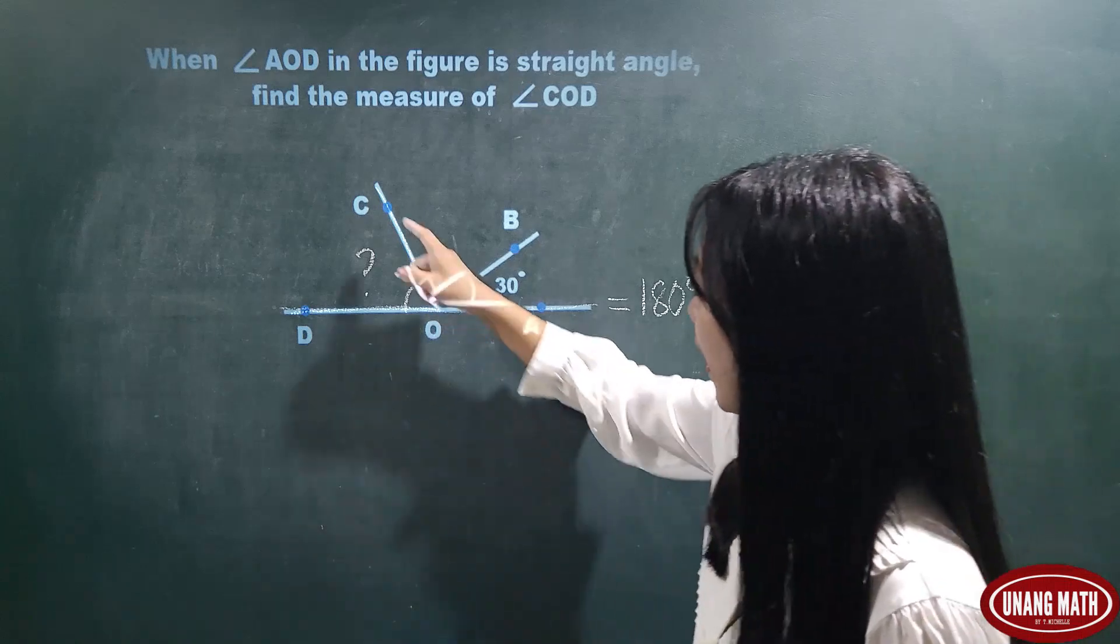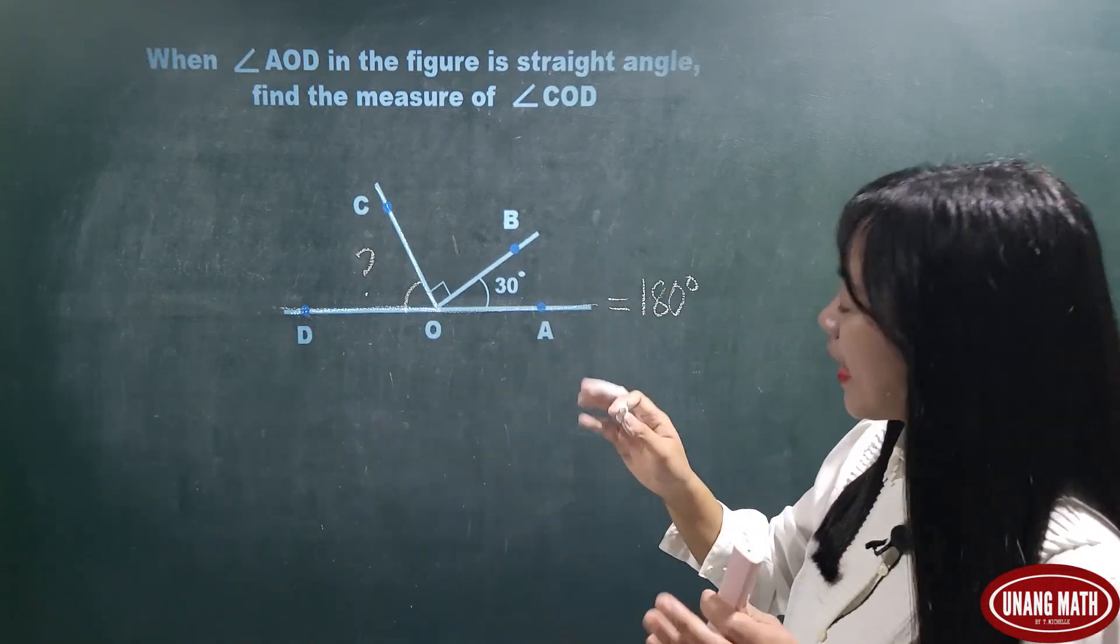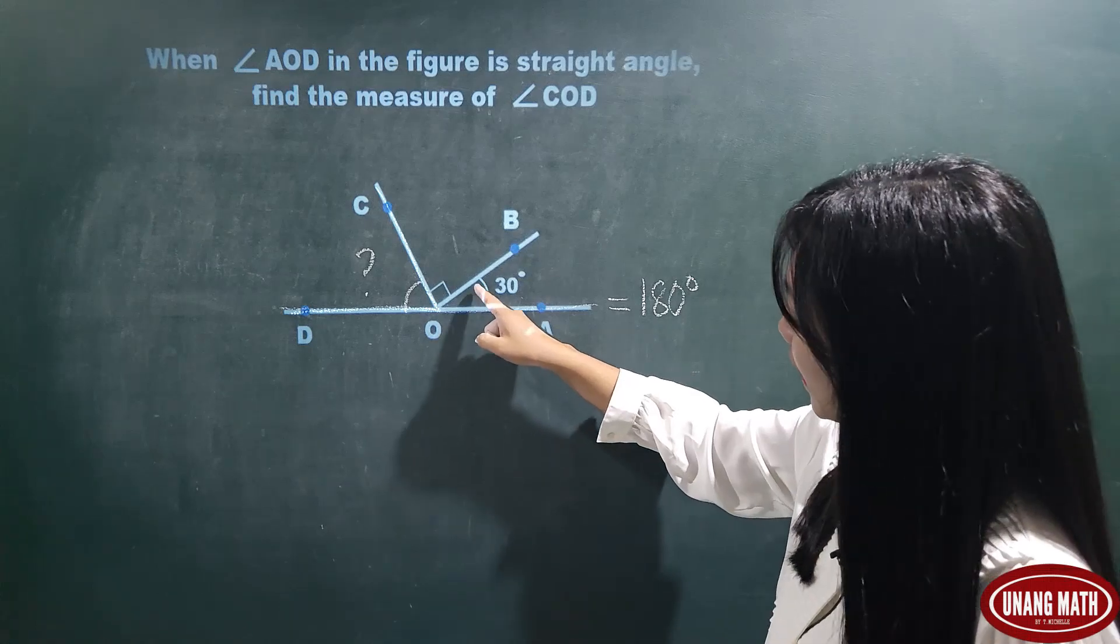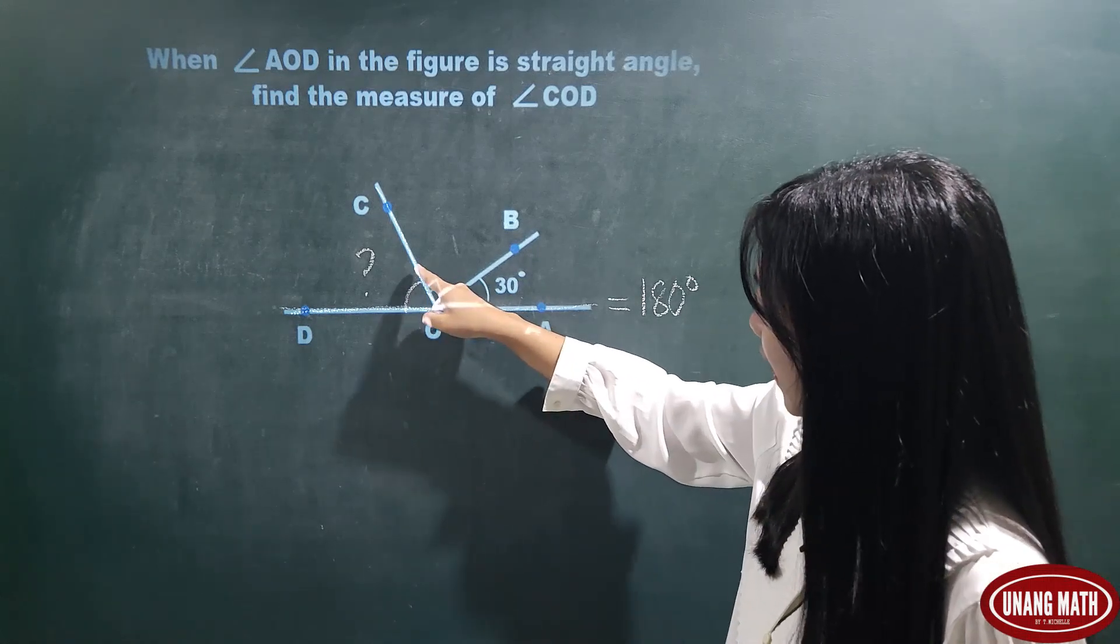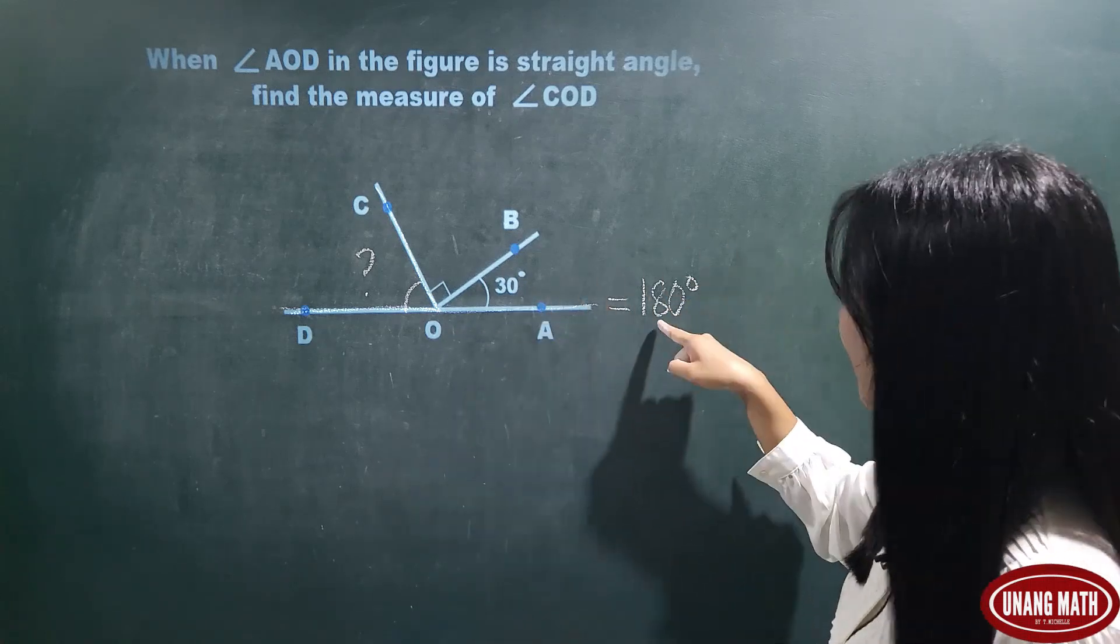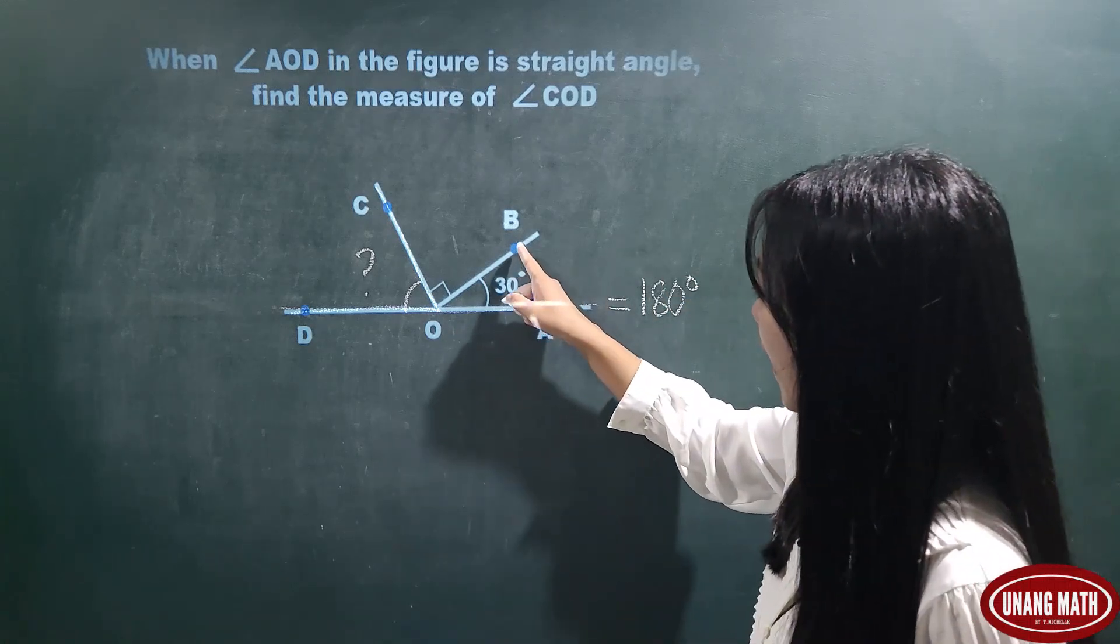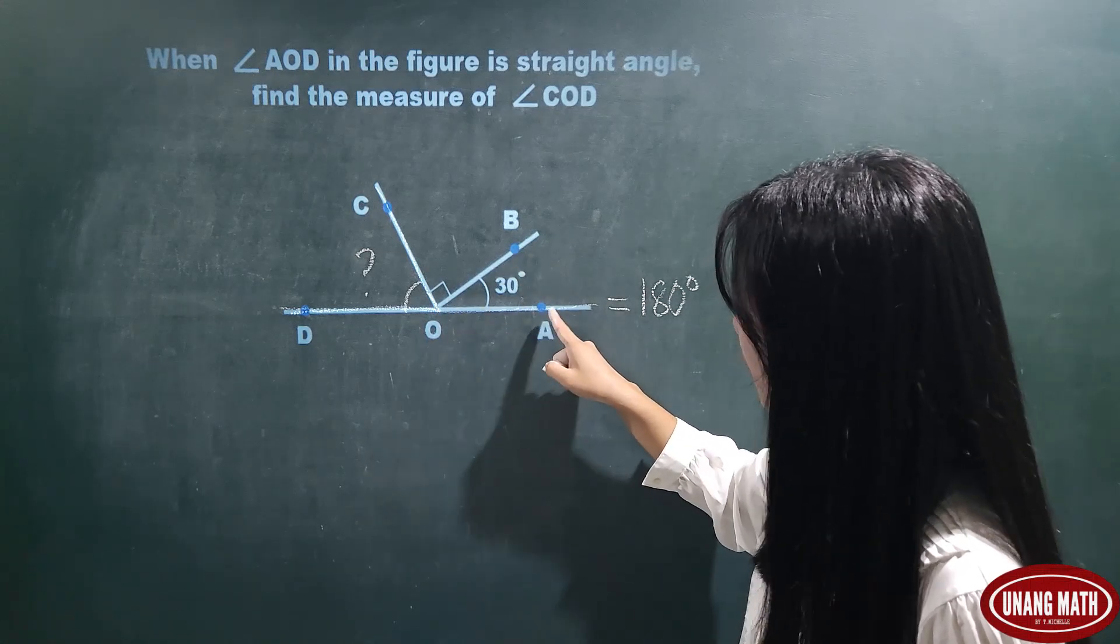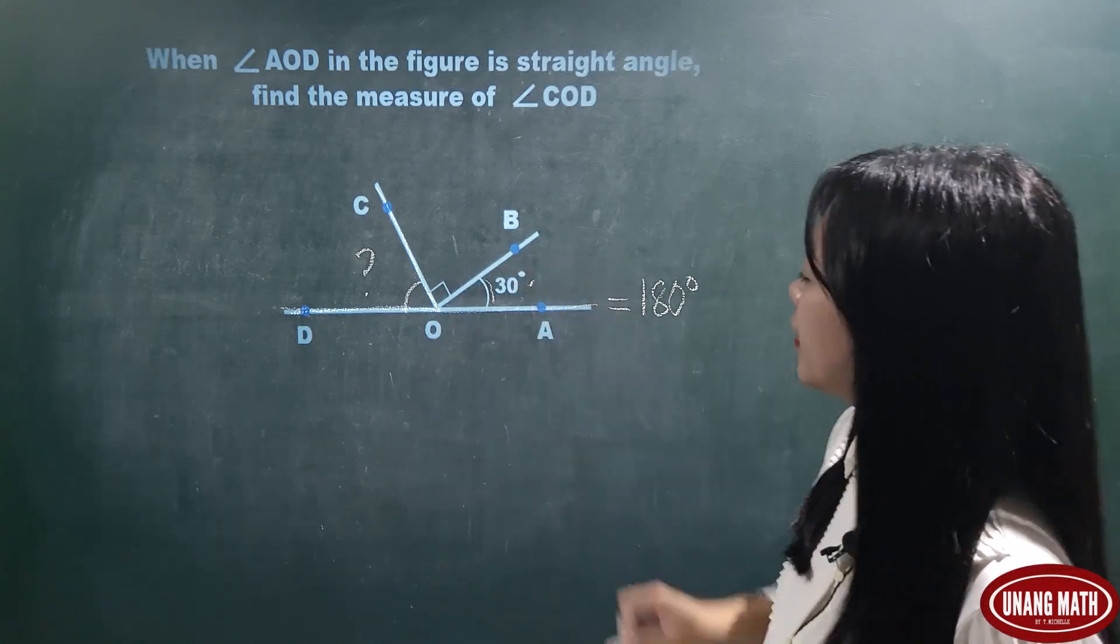We can find angle COD by adding this angle and this angle. And the sum will be subtracted from 180 degrees. Angle BOA or AOB is 30 degrees.